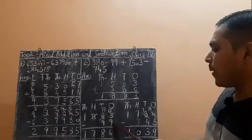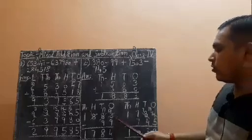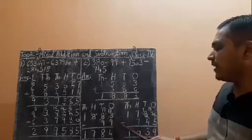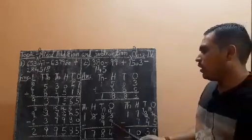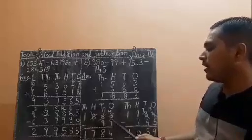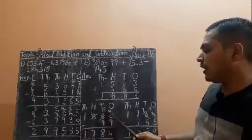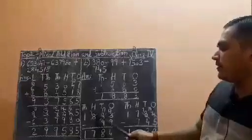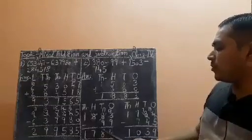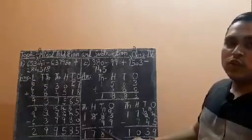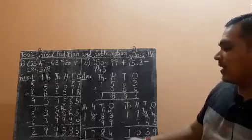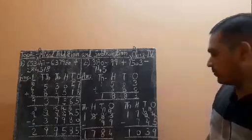Subtracting 99 from 1883: 3 minus 9 — borrow needed, it becomes 13. 13 minus 9 is 4, and the next digit becomes 7. Again borrow, it becomes 17. 17 minus 9 is 8. The digits 7 and 1 are copied down as there are no digits below them. So the result is 1784.